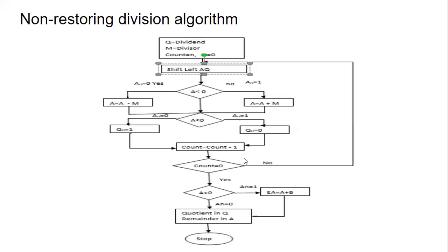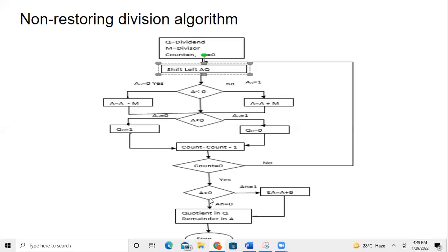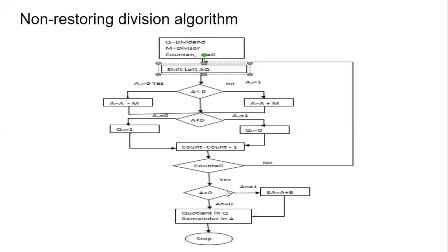Then we decrement the count, and this process repeats until the count becomes 0. Once the count becomes 0, the quotient is placed in Q and the remainder will be in A. We then check whether the answer in A is negative or positive by checking the sign bit — the most significant bit of A.